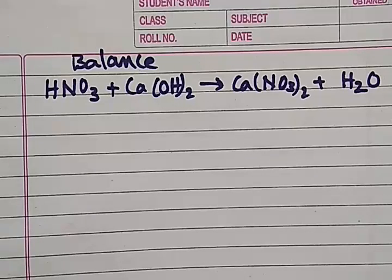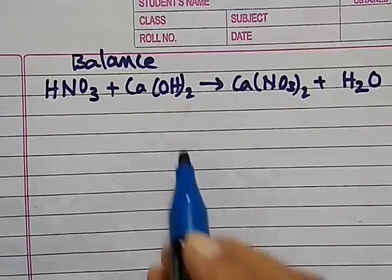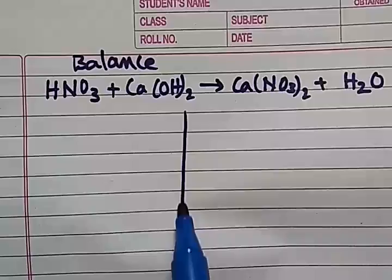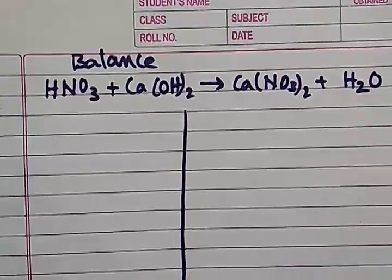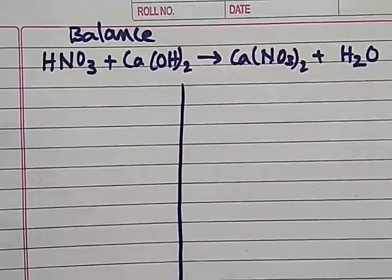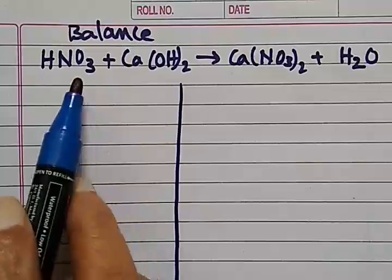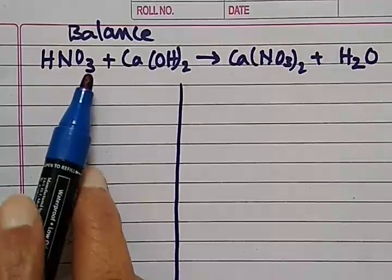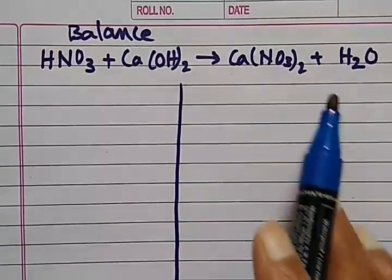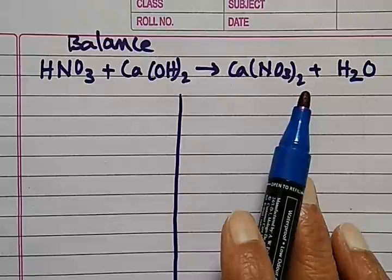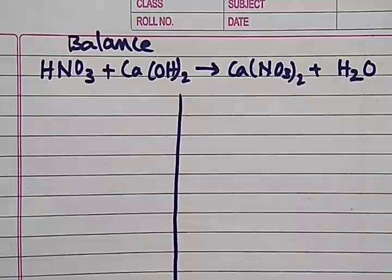Let us see how to balance this. For the first we draw a line in the middle of the sheet. These are reactants and this side products. So let us write the elements and their number, how many numbers are there.